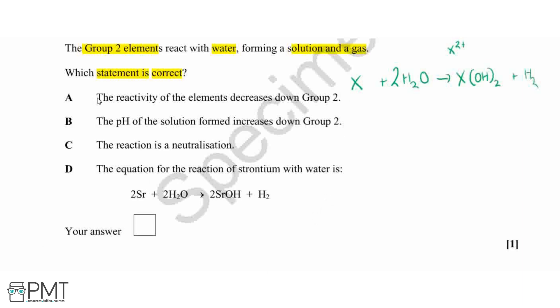So statement A says that the reactivity of the elements decreases down group 2. Now this statement is actually going to be incorrect, and the reason why is because as we're going down group 2, our atomic radius is going to increase, the shielding is going to increase.